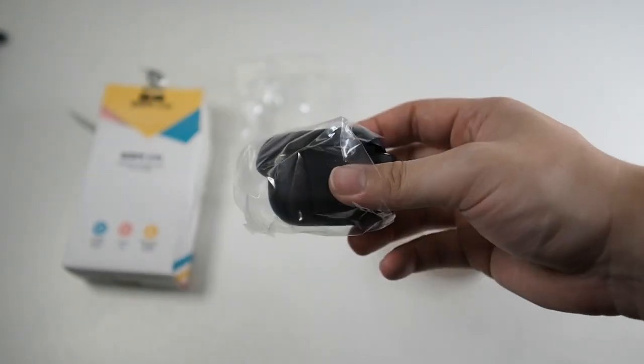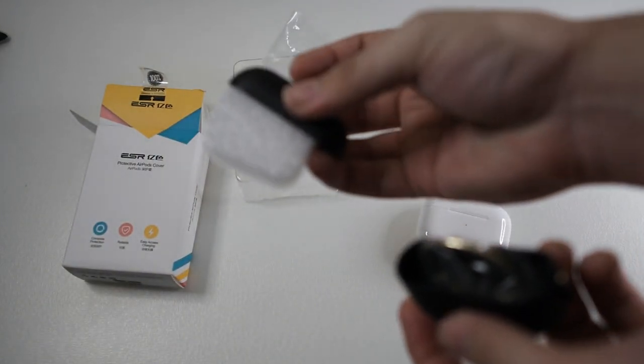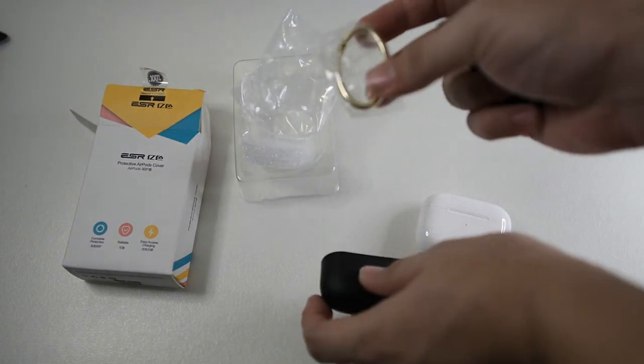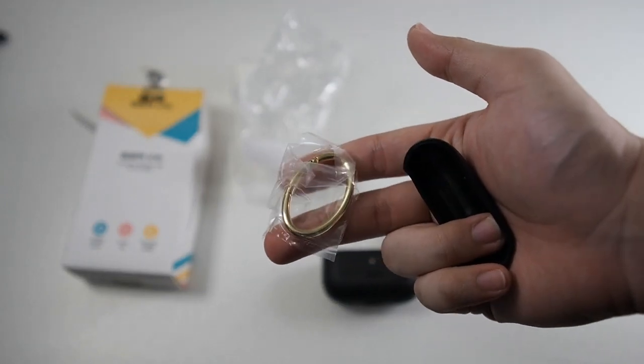Inside the box we get the case itself. Let me take it out of the plastic packaging. There's also a foam inside and a metal ring. In the picture this ring is actually circle, I'm not sure why it's oval here. But anyway, I won't be using this because I'd rather use a lanyard or something.